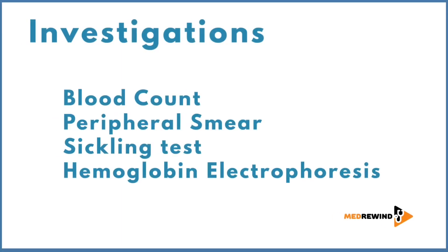Investigations in sickle cell syndrome include blood count, peripheral smear, sickling test, hemoglobin electrophoresis, and high performance liquid chromatography (HPLC). Blood count shows low hemoglobin and high reticulocyte count. Peripheral smear shows characteristic sickle cells; features of hyposplenism include Howell-Jolly bodies, target cells, and ovalocytes. The sickling test is induced by adding a reducing agent such as 2% sodium metabisulfite or sodium dithionate to increase sickling.